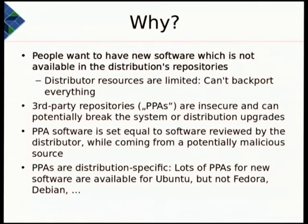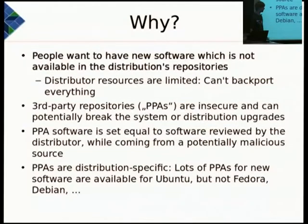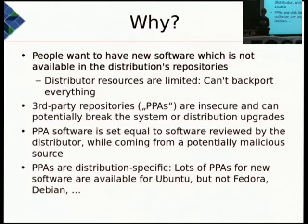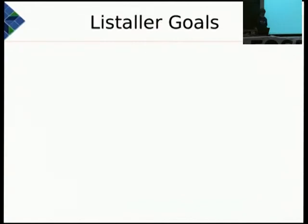PPAs are distribution-specific — many PPAs for new software are only available for Ubuntu, while Fedora and Debian need different sources, resulting in lots of duplication. The OpenSUSE Build Service solves that partly but still requires writing many different spec files. Binary installers also execute code during installation, which often happens with root permission.